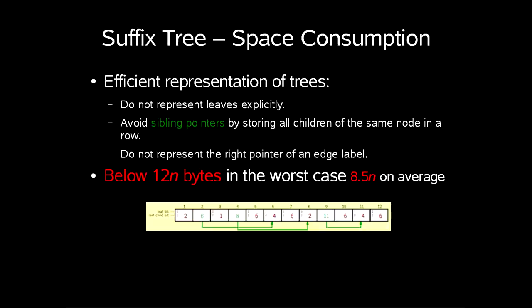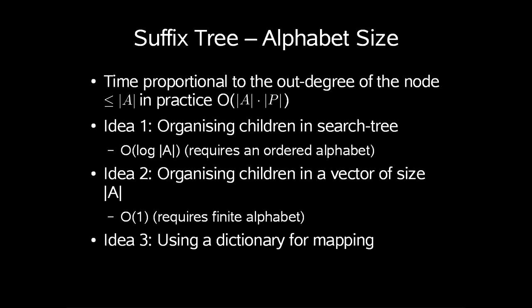Now you might wonder is this really a problem? Well it depends on our n. If the length of our input is about 500 million then yes it would. What we could try to do is improve upon the alphabet size. So how much time does it actually take to find the proper edge out from a node when searching in a suffix tree? The answer is that it would take time proportional to the out degree of the node less than or equal to the length of our alphabet. So search time in practice is order length of the alphabet times length of our search string. If the size of our alphabet is large this really matters.